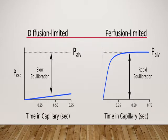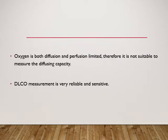In this image you can see perfusion and diffusion limited gases compared. In the case of perfusion limited gases, equilibration is rapid and complete. In the case of diffusion limited gases, equilibration is slow and incomplete. For perfusion limited gases, the rate of gas uptake in the capillary is determined by capillary blood flow. Oxygen is both diffusion and perfusion limited, therefore it is not suitable to measure diffusing capacity. DLCO measurement is very reliable and sensitive.